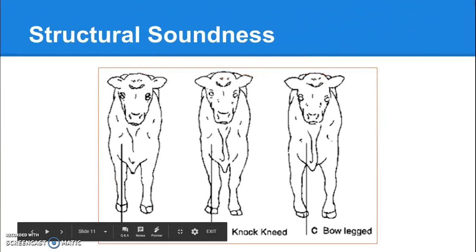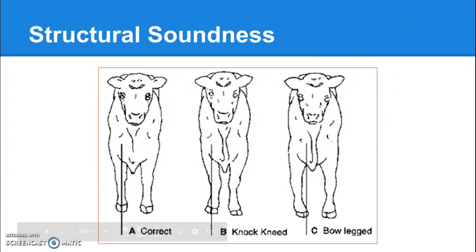Looking at the animal face-on from the front, you want to draw a line from the point of the shoulder all the way down to the foot, and it should hit the middle of the leg the whole way down. If they're knock-kneed, they'll be toed out and you'll put more stress on the knee and fetlock. If they are bow-legged, you'll end up with more pressure on the elbow and the knee.